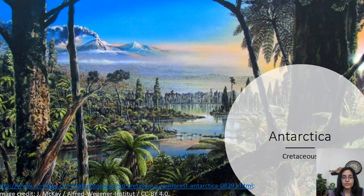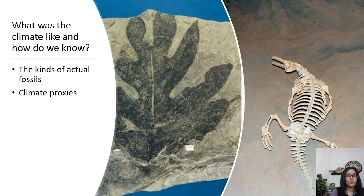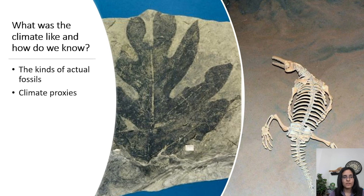How do we know what it was like in the polar regions during the Cretaceous? One of the first clues is the fossils we find — fossils of different animals and plants help us reconstruct the ecosystem. Some animals have specific temperature ranges in which they can live; for example, the champsosaur has been found in Alaska but generally doesn't exist in areas with freezing temperatures. So just finding these fossils tells us those locations probably did not freeze very often, if at all.